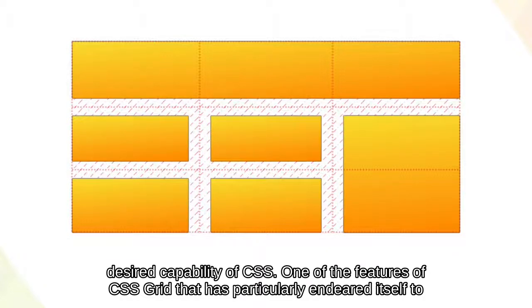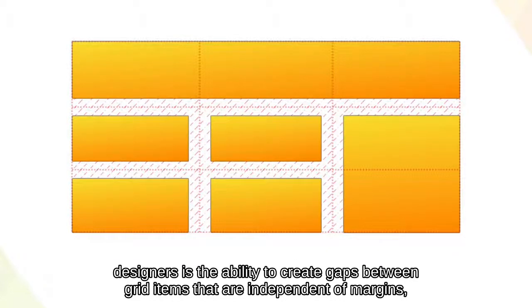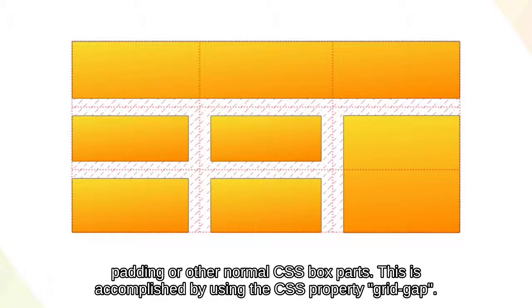One of the features of CSS Grid that has particularly endeared itself to designers is the ability to create gaps between grid items that are independent of margins, padding, or other normal CSS box parts. This is accomplished by using the CSS property GridGap.